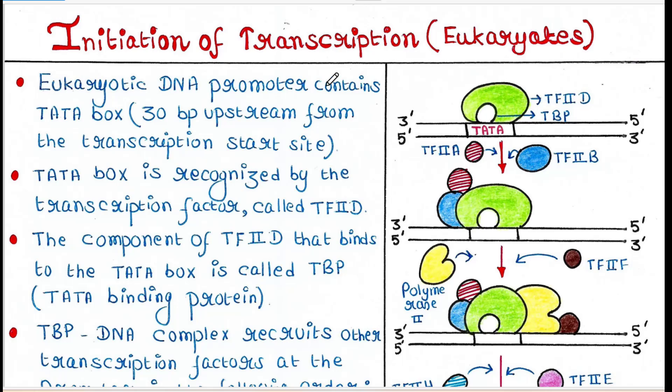Eukaryotic DNA promoter contains TATA box, which is 30 base pairs upstream from the transcription start site. That means it is 30 base pairs before the transcription start site.